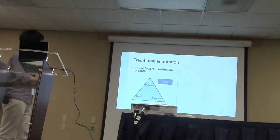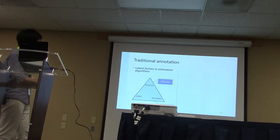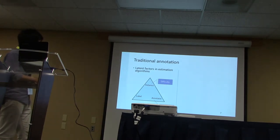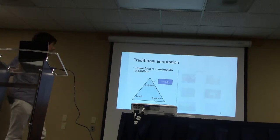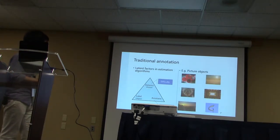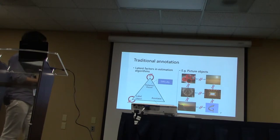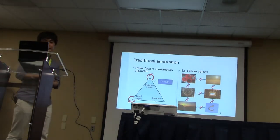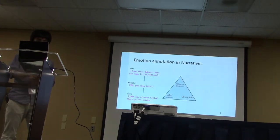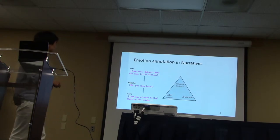Most estimation algorithms include latent factors related to three components: instance difficulty, annotator bias, and annotator expertise. In traditional annotation tasks such as picture object annotation, there are no internal relationships among instances and among labels, so for each repeatedly annotated picture the reliable annotation is produced separately. On the other hand, emotive expressions cannot be divorced from context.